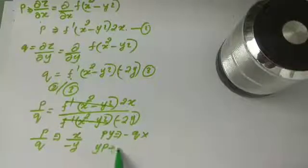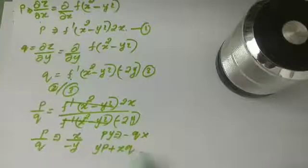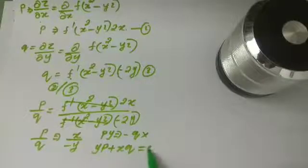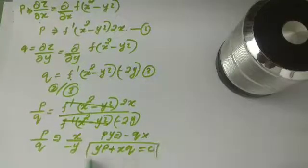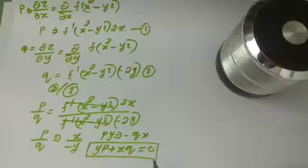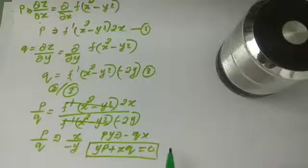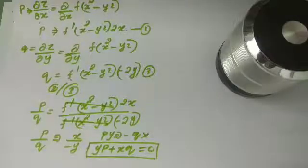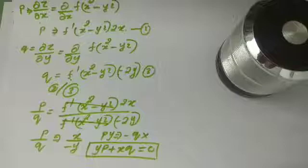So yp plus xq is equal to 0. That is the answer. This method is called elimination of arbitrary functions. This resulting equation is called a partial differential equation.